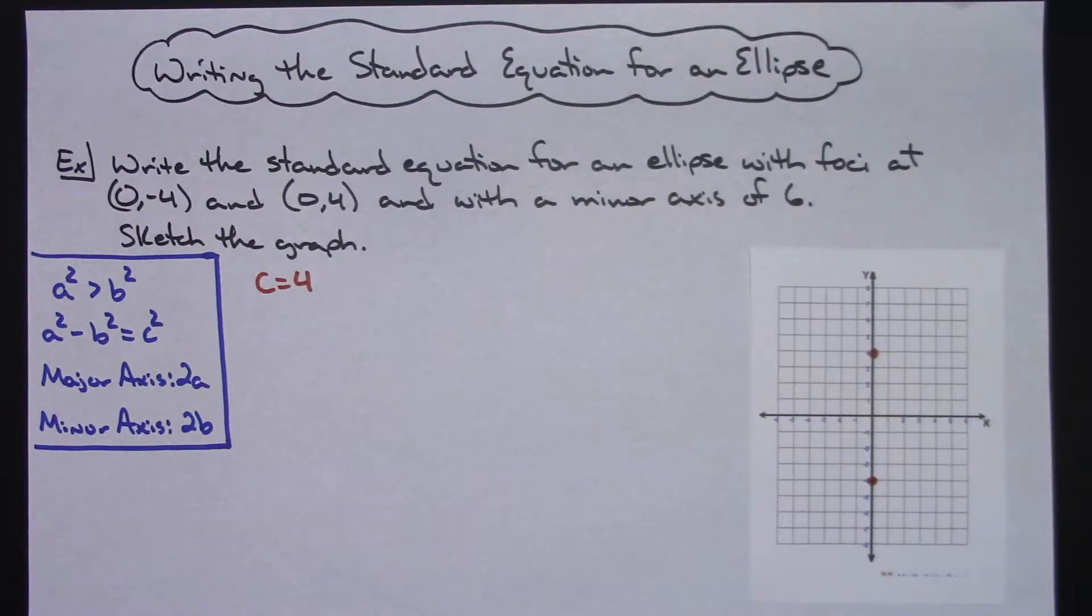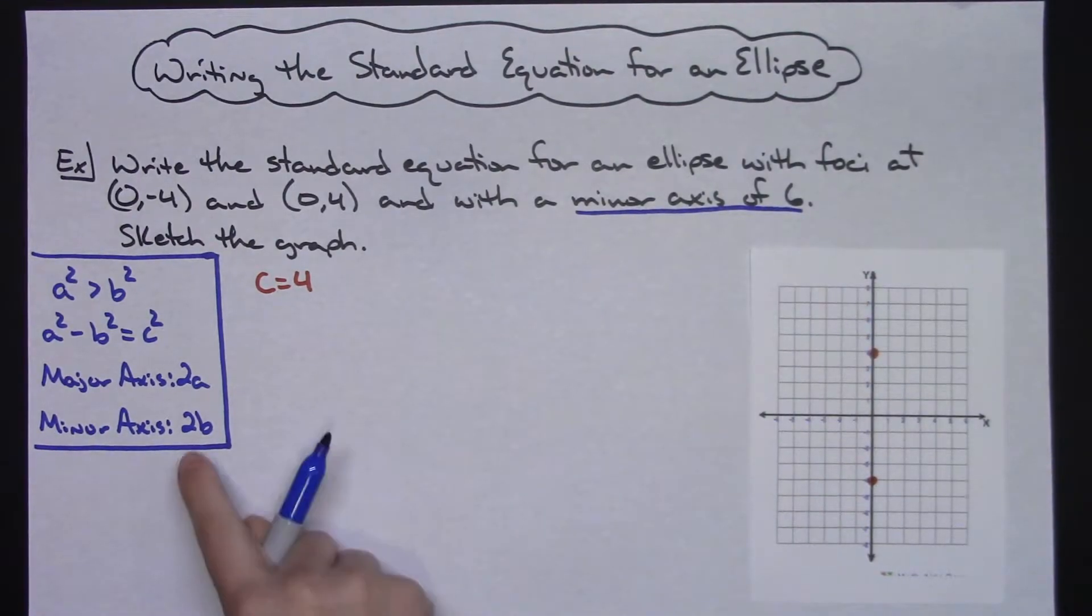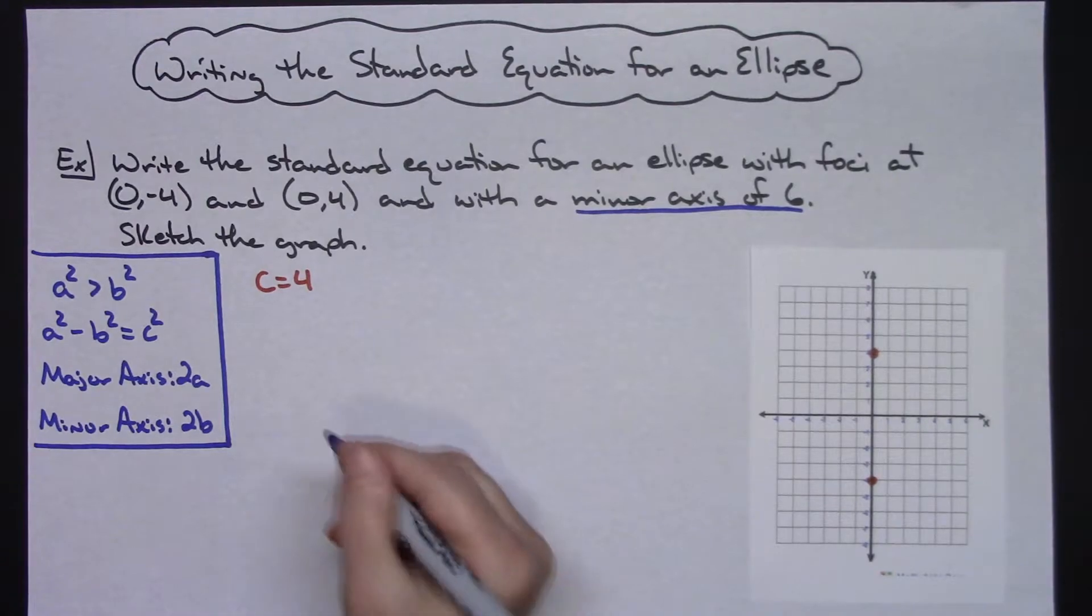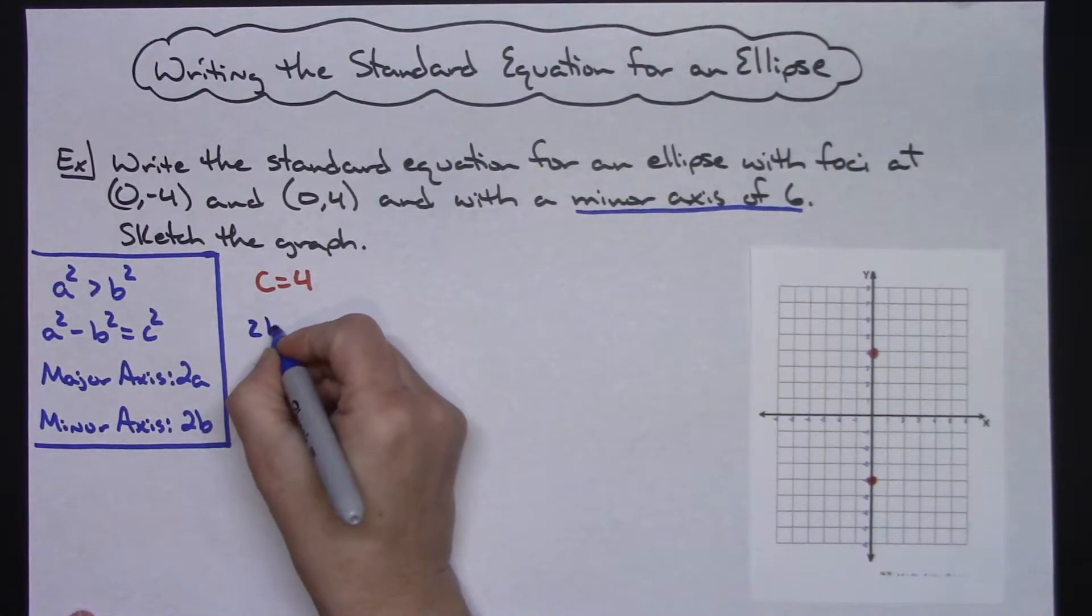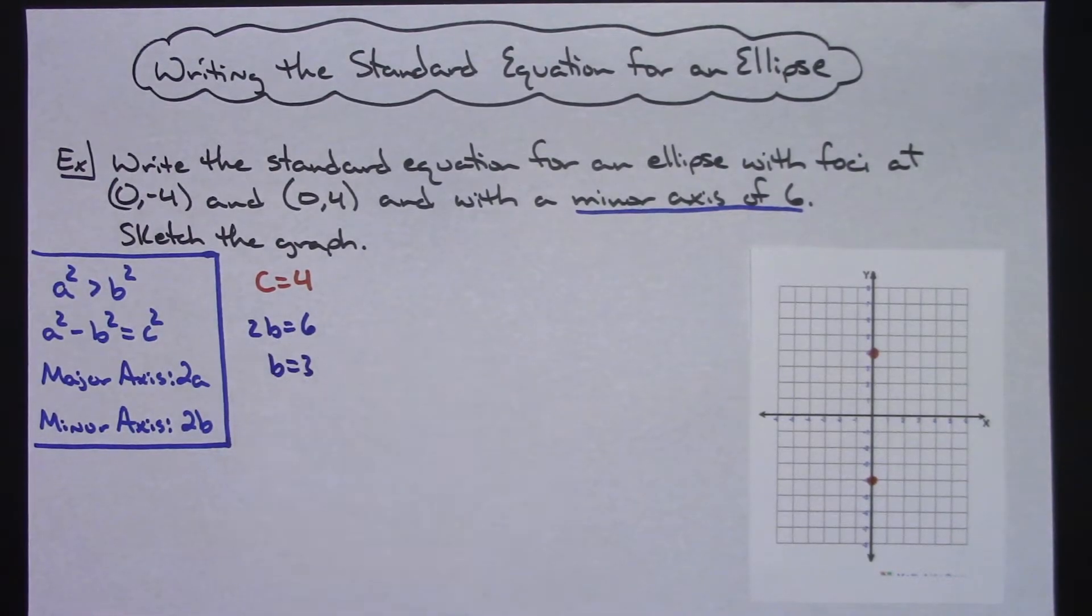Now it also tells me that the minor axis is 6. Well I have a formula for the length of the minor axis being 2B. Since I know that's 6, then I can set those two things equal to each other and find my B variable. So 2B equals 6. That means B equals 3.